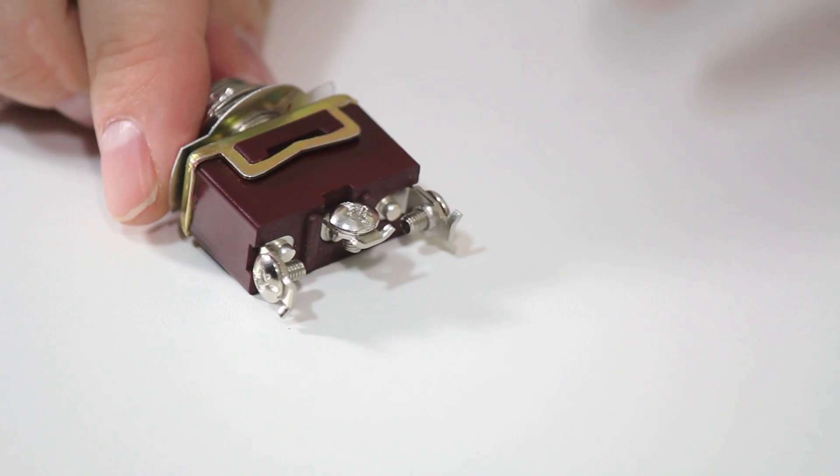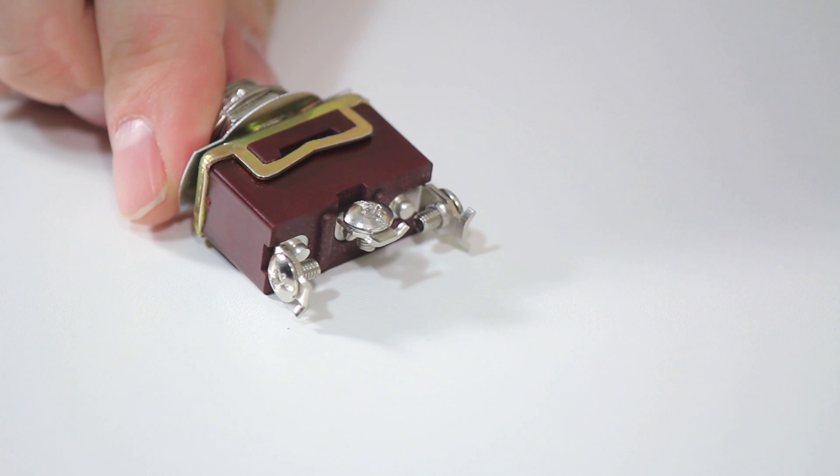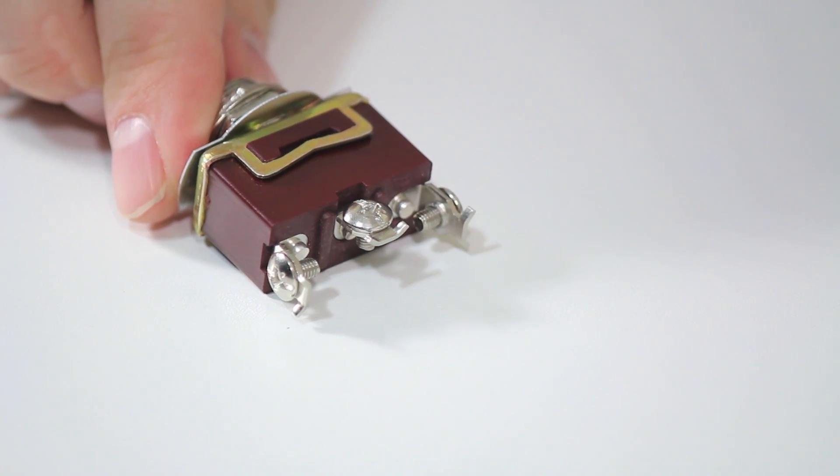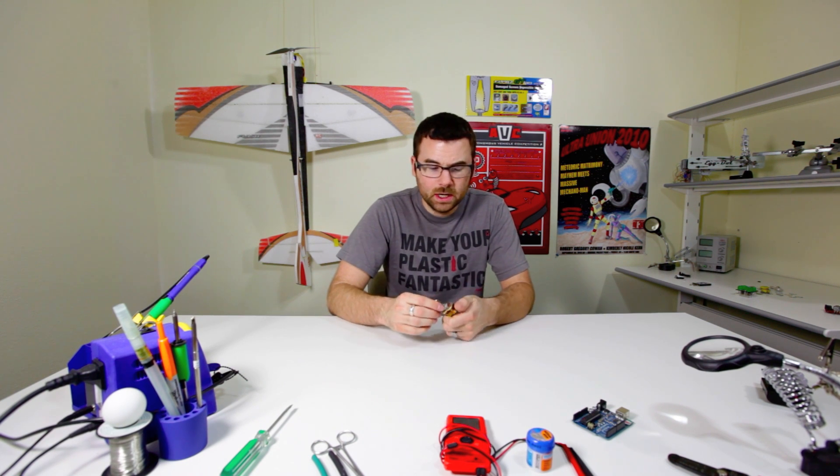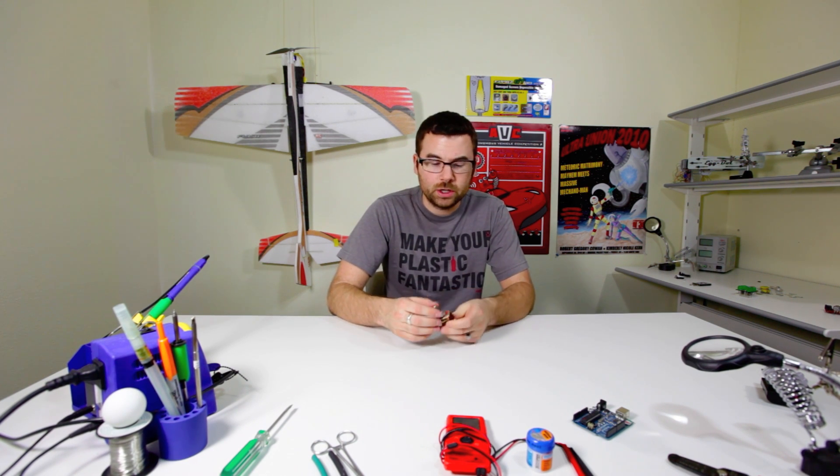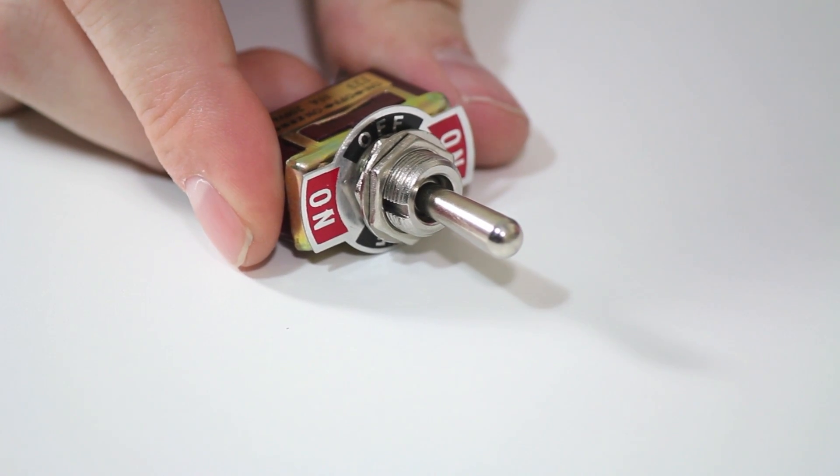It's got these nice solder lugs and screw terminals at the back so you can wrap a wire around it and screw it in there or you can solder directly to these lugs. These can handle 125 volts AC at 15 amps so it's a pretty beefy switch and it even has a panel mount here so you can just drill a hole, screw it in, and you're good.